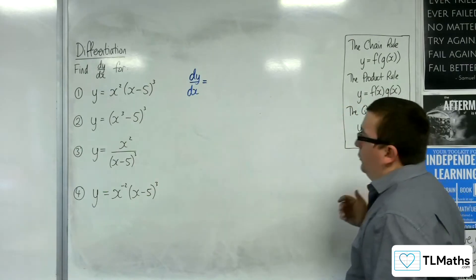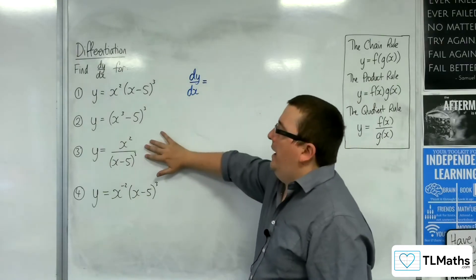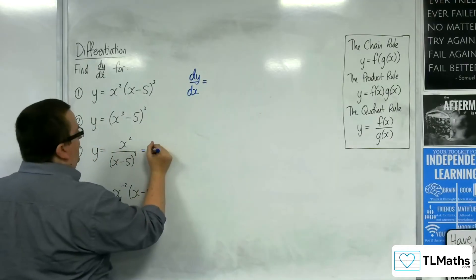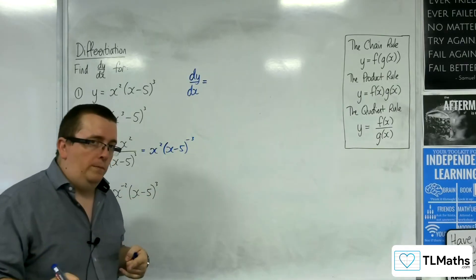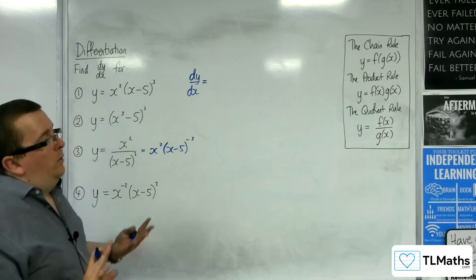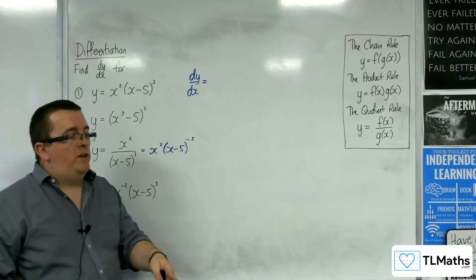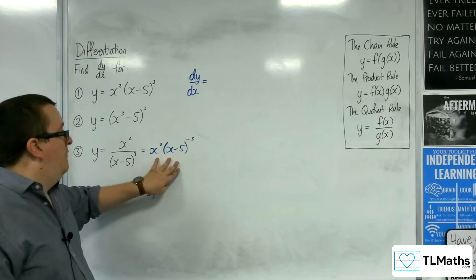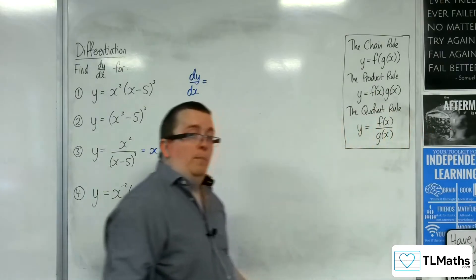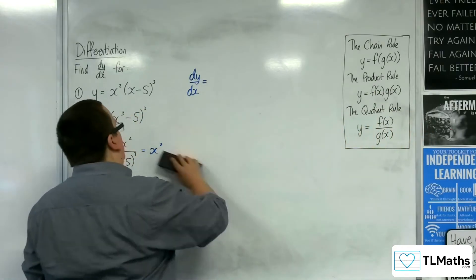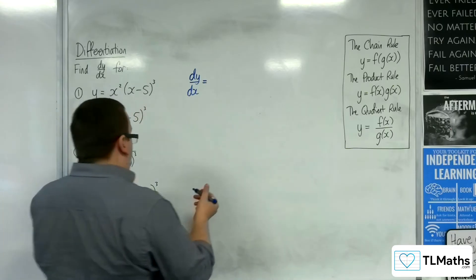This is where you get a bit of a choice. It naturally looks to be the quotient rule because you've got a quotient of functions. You can use the quotient rule straight off the bat, and that's what I would personally use. The alternative is to write it as x squared times (x minus 5) to the minus 3, and then use the product rule with a bit of chain rule.